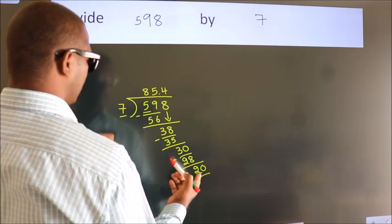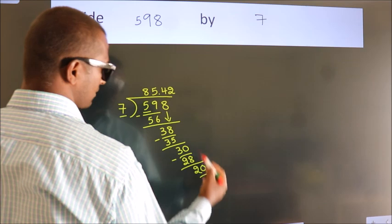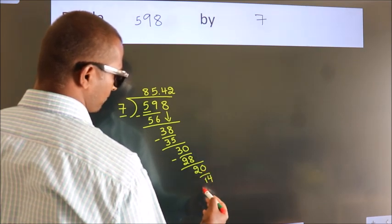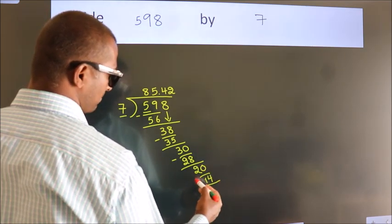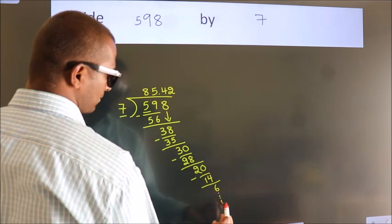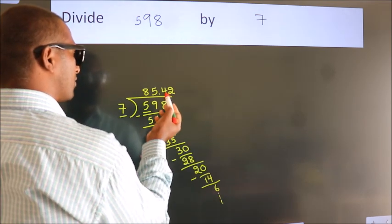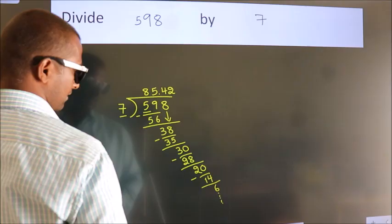A number close to 20 in the 7 table is 7 times 2, which is 14. Now we subtract. We get 6. And the division continues. It is enough if we do up to 2 decimal places.